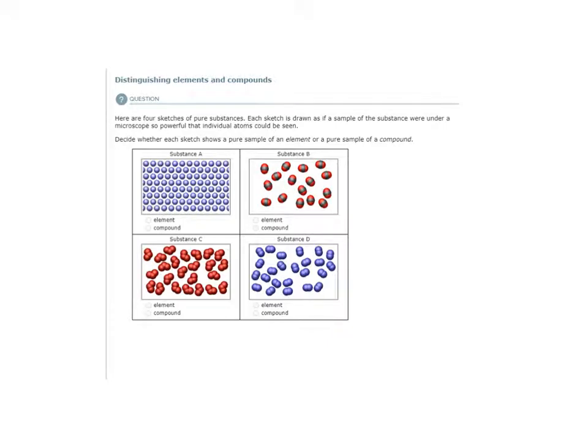Distinguishing elements and compounds. So here we are to decide whether each sketch shows a pure sample of an element or a pure sample of a compound. So let's look at what we have. We have four different substances and we know that pure substances can either be elements or compounds. What's going to be the difference between the two?